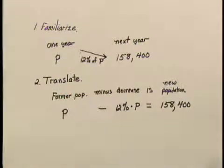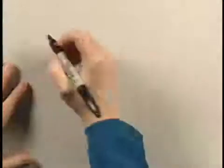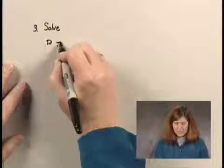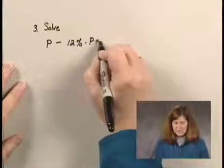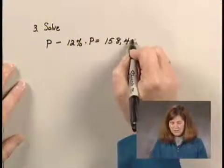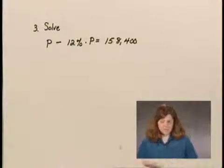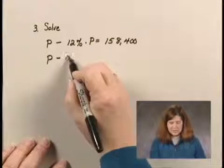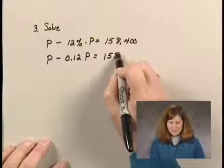Now, we can move to our next step in the problem-solving process, which is to solve this equation. To solve that equation, we are solving P minus 12% times P equals 158,400. Let's write 12% as a decimal in order to know how to manipulate this. That's P minus 0.12P equals 158,400.